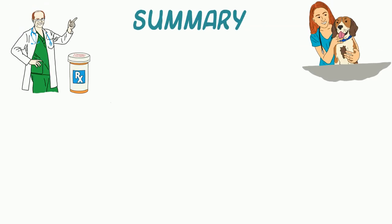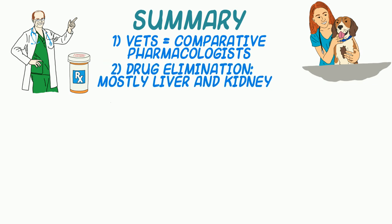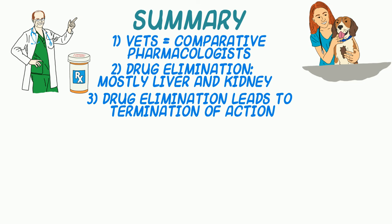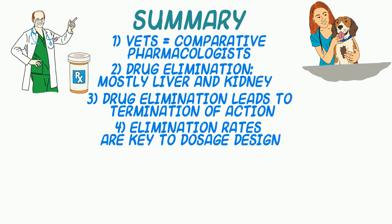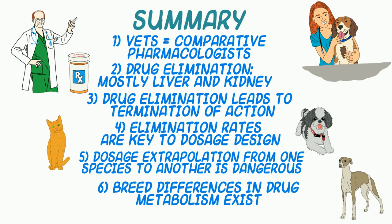In summary, veterinarians need to be aware of the differences between species with respect to drug elimination rates, including metabolism and excretion. The liver and kidney are the main organs responsible for drug elimination. Drug elimination is often the main factor leading to the termination of action of an administered drug, and elimination rates are key to understanding the rational design of drug dosages and intervals. Inappropriate extrapolation of drug dosages from one species to another can lead to serious undertreatment or worse toxicity and possibly death. Finally, drug metabolic differences have also been identified in certain dog breeds — for example, caution should be taken with administering anesthesia and other drugs to sighthounds.